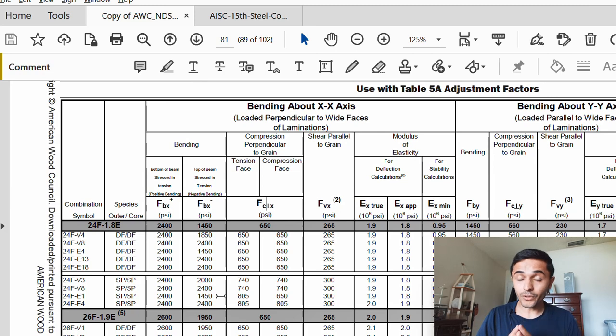This is important because a typical sawn lumber beam will not have these different design values for bending. A glulam beam is made of lambs and because of that we end up having two different design values for bending for the top lamb and for the bottom lamb.